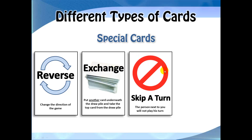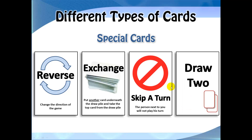Next we have a skip a turn card. This means that the person next to you will not play his turn — you will skip his turn. Finally, we have a draw 2 card. As the name implies, the next player will draw 2 cards.